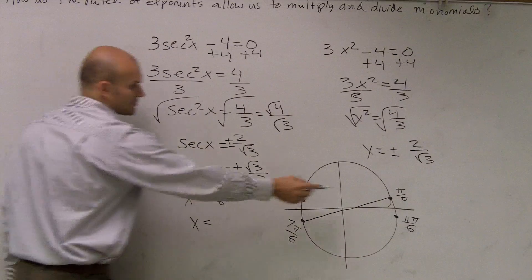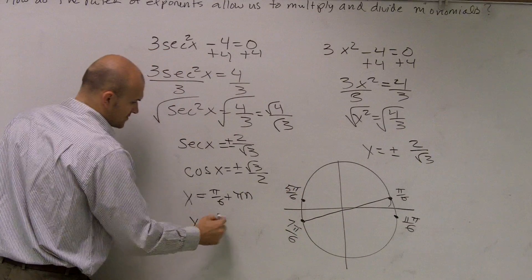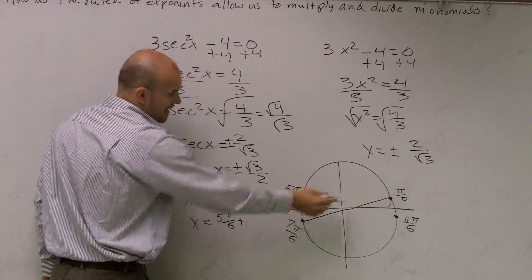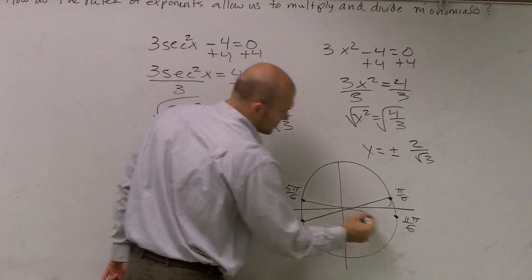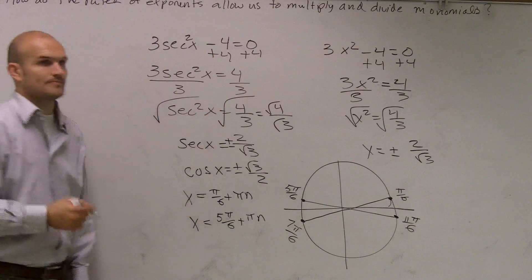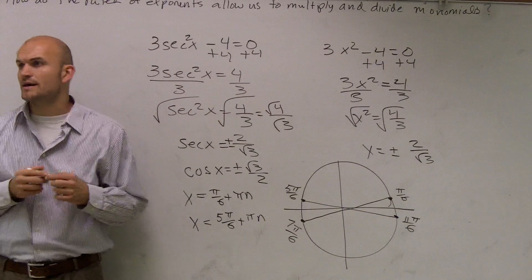My other answer could be 5 pi over 6 plus, and if I add pi to this answer, I get to my other solution. So I can give pi n. Anybody have any questions on that?